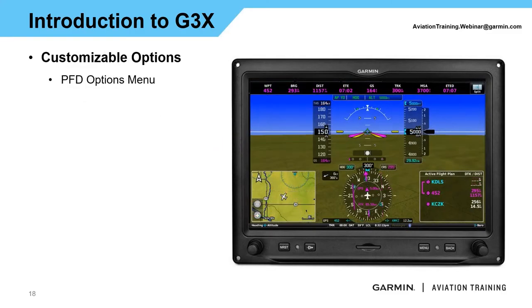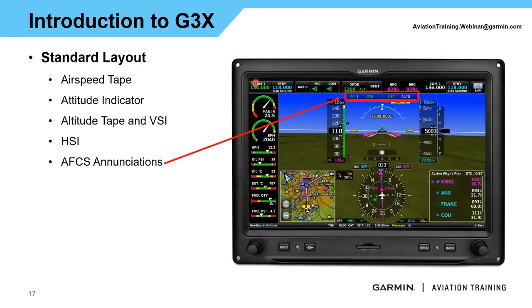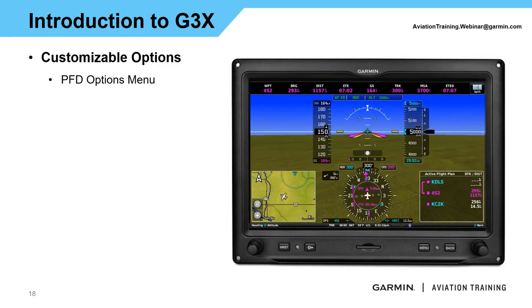The G3X itself is highly, highly customizable. A lot of it's going to be based on what we have interfaced in. Going back to the previous slide, I can see I've got COM1 interfaced in with options to control the radio from the display, an audio panel wired to the display, a transponder control, and other configurable options. I even have COM2 controls. Multiple COMs, transponders, audio panels — all can be controlled from the display depending on how it's interfaced and interconnected.